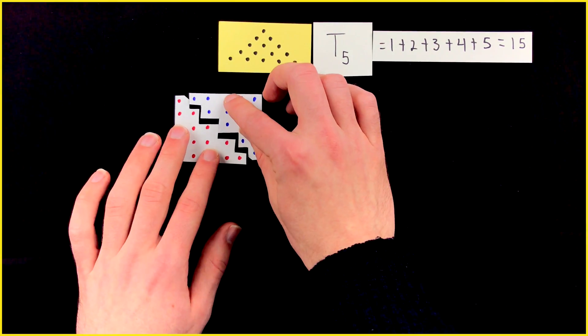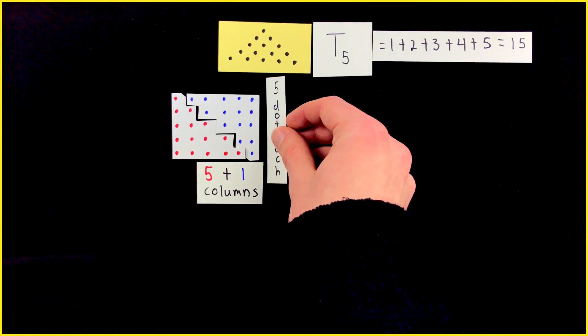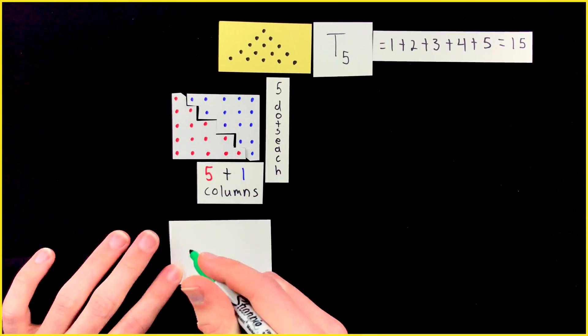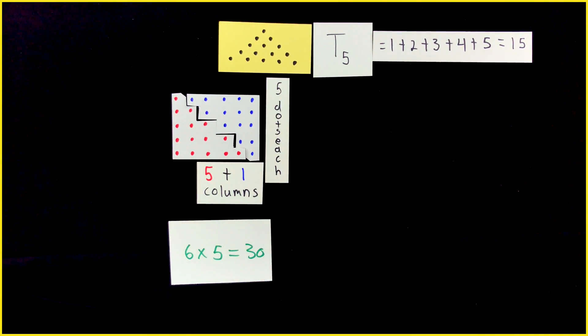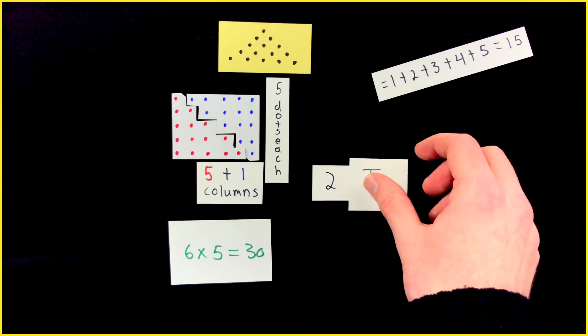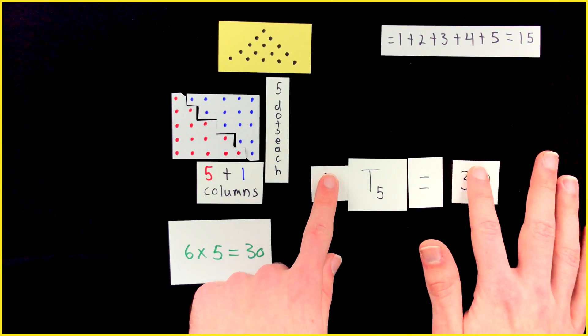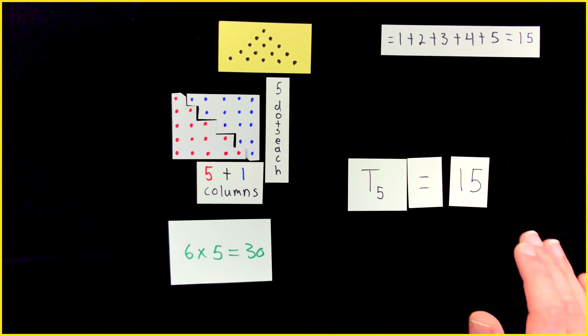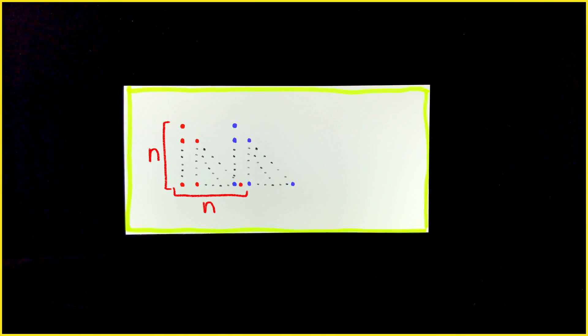Here's a rectangle that has five plus one columns of five dots each. That's a total of six times five, or 30 dots. So what is T5? We just figured out that two copies of T5 is 30. So T5 must be 15. And we could perform this same process with any triangular number. Take Tn, arrange it as a right triangle, copy it, spin it 180 degrees,